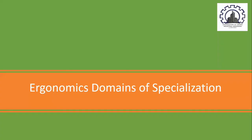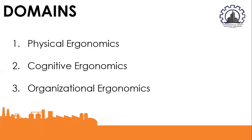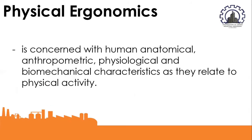Moving on to our next key area — the ergonomics domains of specialization. Ergonomics is composed of three domains: first, physical ergonomics; second, cognitive ergonomics; and third, organizational ergonomics. Let us discuss what physical ergonomics is. Physical ergonomics is concerned with the human anatomical, anthropometric, physiological, and biomechanical characteristics as they relate to physical activity. This is the ergonomics domain we are most concerned with in the workplace.